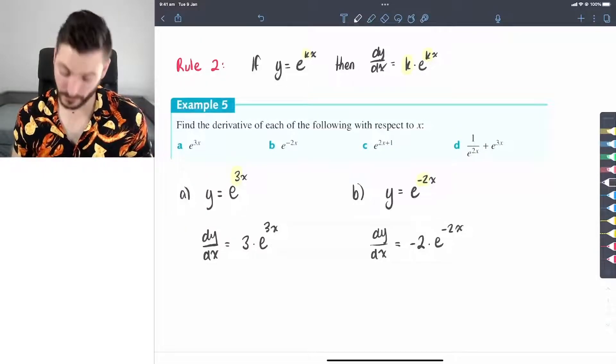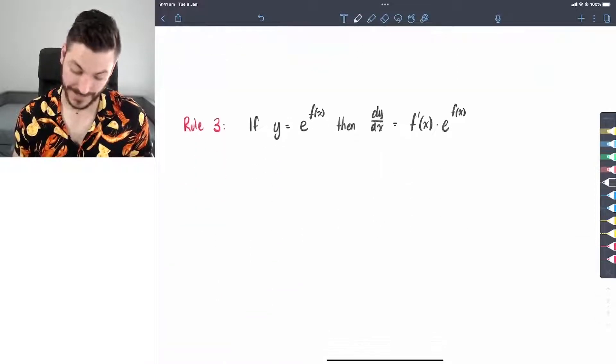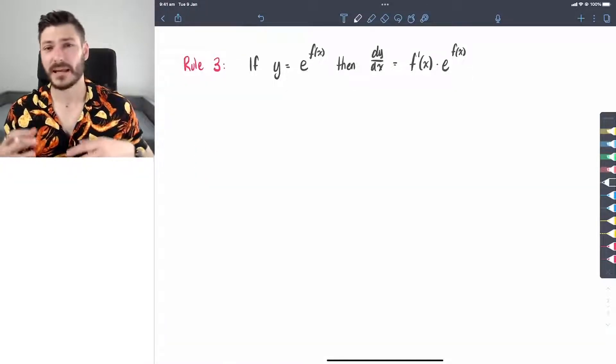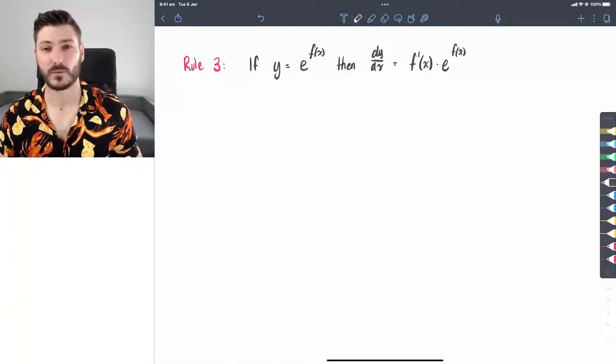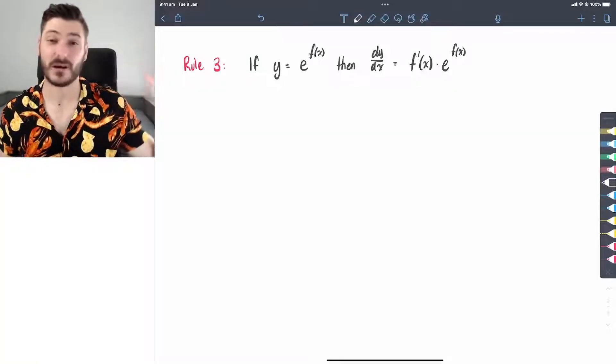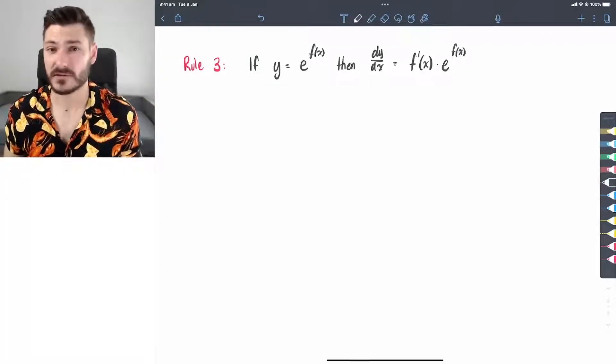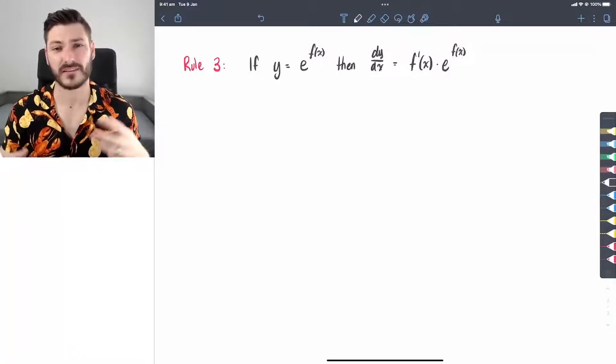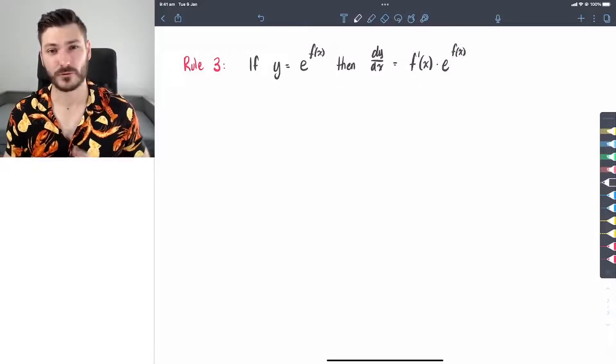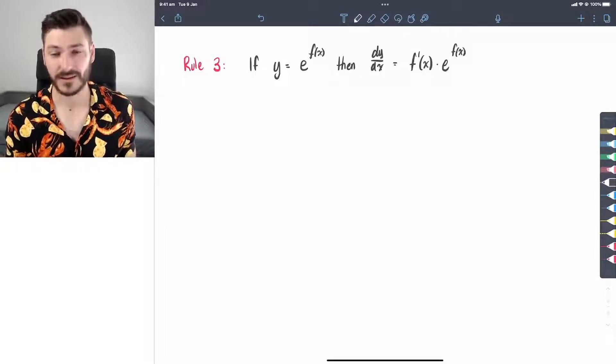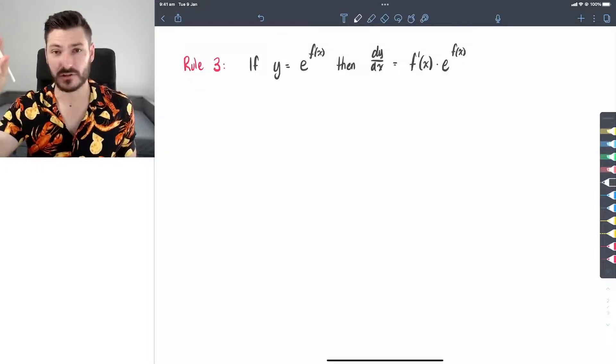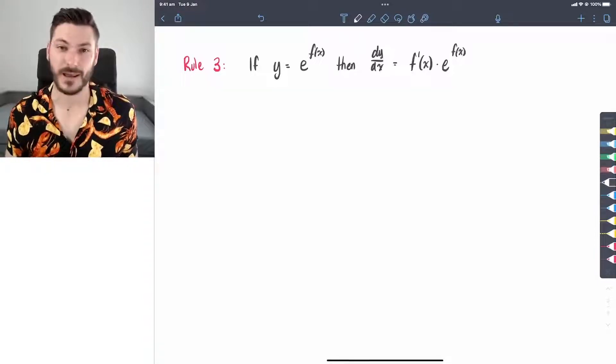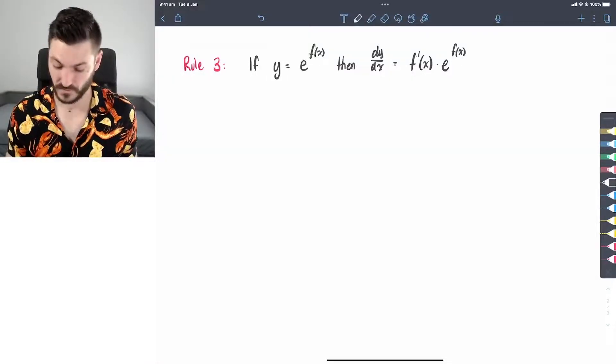Finally, rule number three, slightly more complexity again. If we've got a function y which is e to the power of some other function of x, we can use the chain rule. And again, there's going to be a video on screen showing how the chain rule makes this happen. But if you just want to follow the rule and keep it simple to start, the derivative of the upper function, or the power function, comes down the front and multiplies by the original. Let's see it in action.